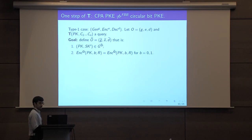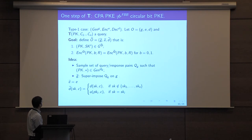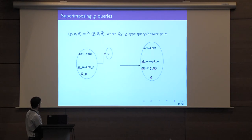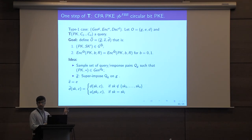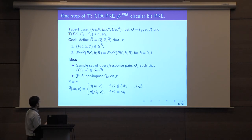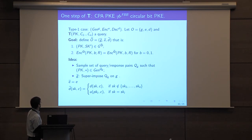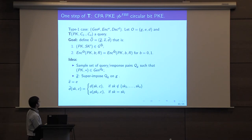Our approach resolves this problem as follows. Oracle T will perform decryption not relative to O, but relative to a related oracle O-twiddle, under which PK is indeed a valid public key. O-twiddle is close enough to O in the sense that if you perform random encryptions of bits once relative to O and once relative to O-twiddle using the same randomness, then with high probability you get the same output. This guarantees that if the inputs to T are correctly formed, we will get the correct decryption result. To form O-twiddle, we sample a set of query-response pairs QG in offline mode such that PK is a valid public key relative to QG, and then superimpose QG on G. The encryption algorithm is kept the same, and the decryption algorithm is defined accordingly.